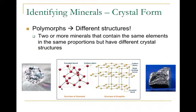Some crystals have more than one form — diamonds and graphite are the classic example. Both are pure carbon, but oriented differently. In graphite, sheets of slick carbon atoms slide off easily as you write. Diamond has a complex three-dimensional structure where carbons have multiple bonds, making it extremely hard.